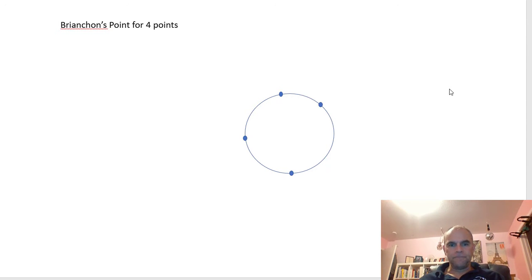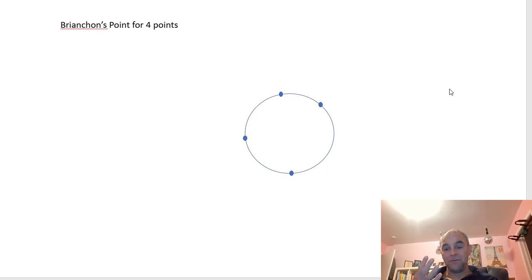Hi, this is Brianchon's point for four points on a circle. Basically, it's the dual of Pascal's line for four points.